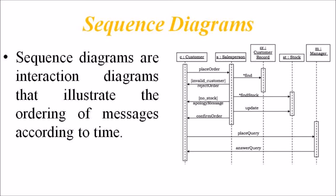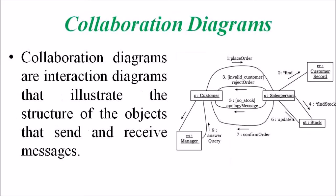Next we are discussing the Collaboration Diagram. A Collaboration Diagram is an Interaction Diagram that illustrates the structure of the objects that send and receive messages. In these diagrams, the objects that participate in the interaction are shown using vertices. The links that connect the objects are used to send and receive messages. The messages are shown as labelled arrows.